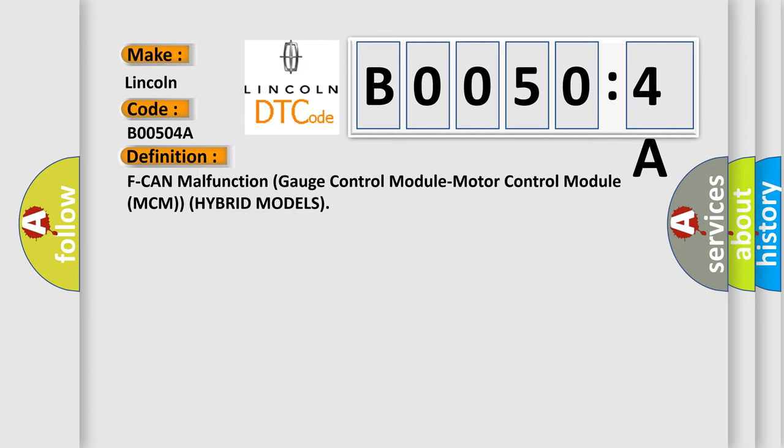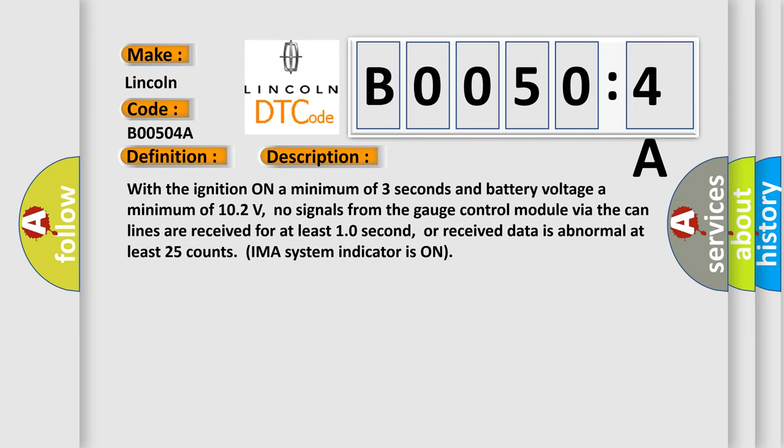And now this is a short description of this DTC code. With the ignition on a minimum of three seconds and battery voltage a minimum of 10.2 volts, no signals from the gauge control module via the CAN lines are received for at least 10 seconds or received data is abnormal at least 25 counts. IMA system indicator is on.